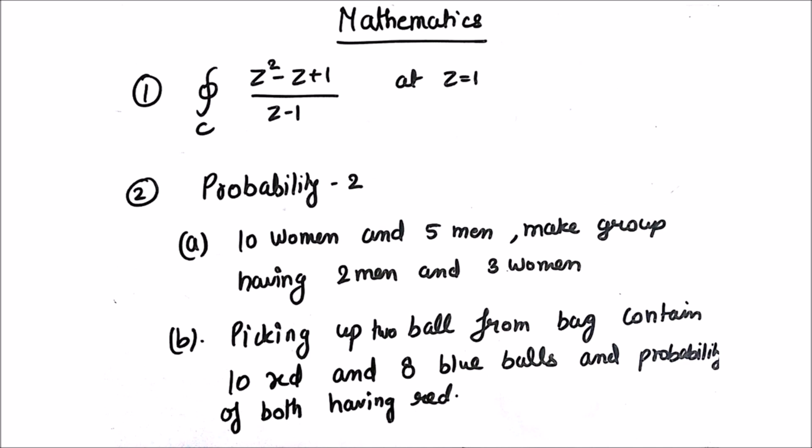In mathematics, a complex integration was given and they wanted the value of that integration. In probability, two questions were asked. An idea was given as shown. You can judge which type of question and solve it accordingly.